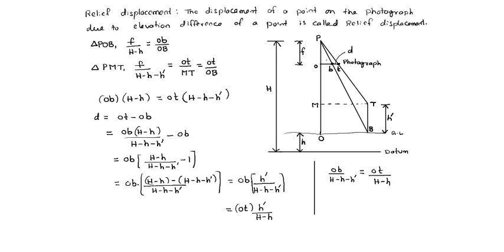This is relief displacement D. Or, H-dash equals (H minus h) into D divided by OT. So like this we can find the tower height by using the relief displacement concept.